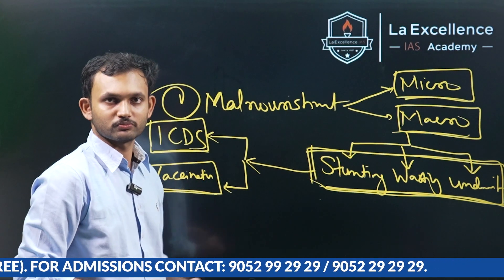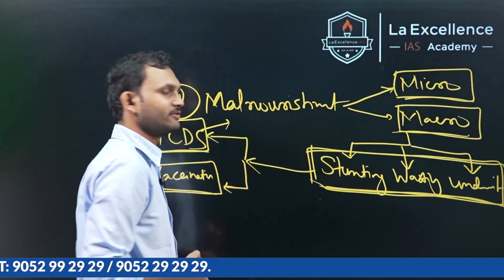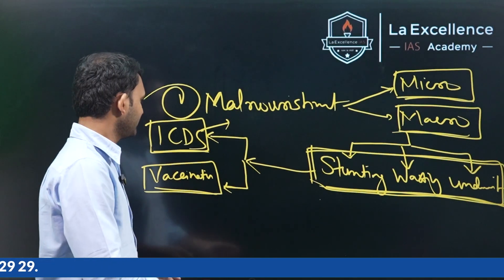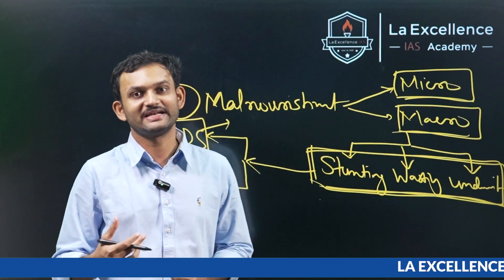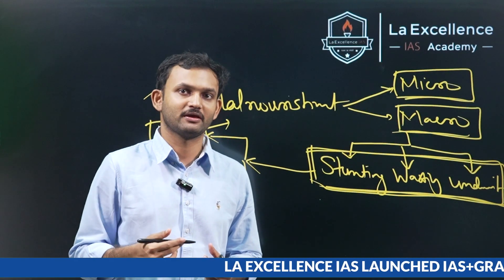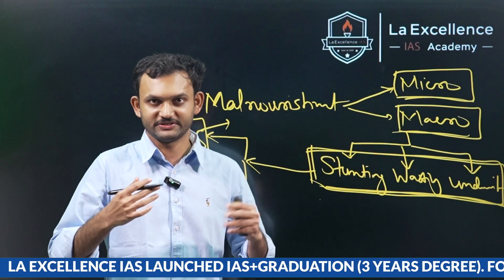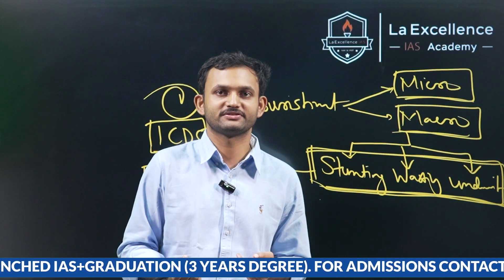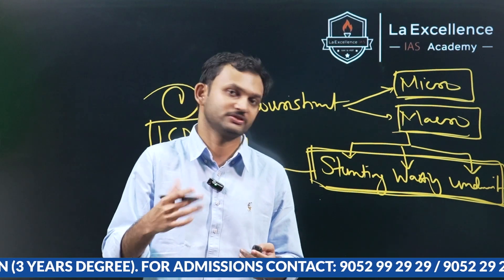For micronutrients, we would be fortifying the food distributed, or else the food distributed would be exactly targeting the specific deficiency. That means we would be providing iron tablets for anemia, or zinc-included food or tonics to address zinc deficiency. This is how we would address micronutrient deficiencies — this is one part of it.